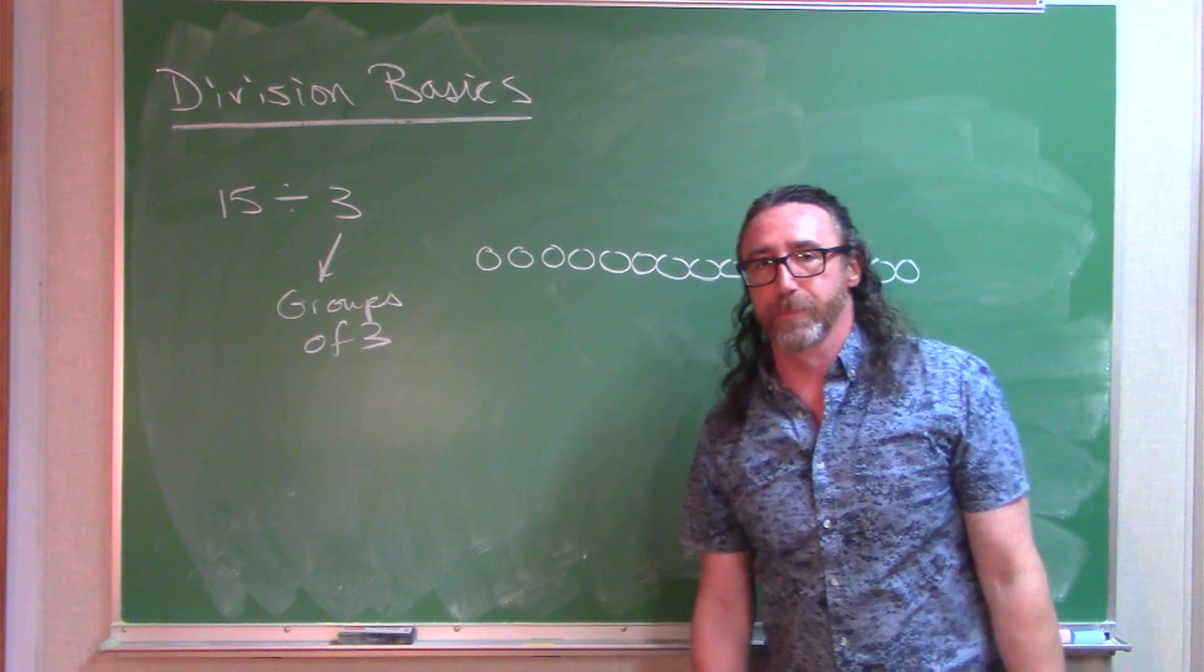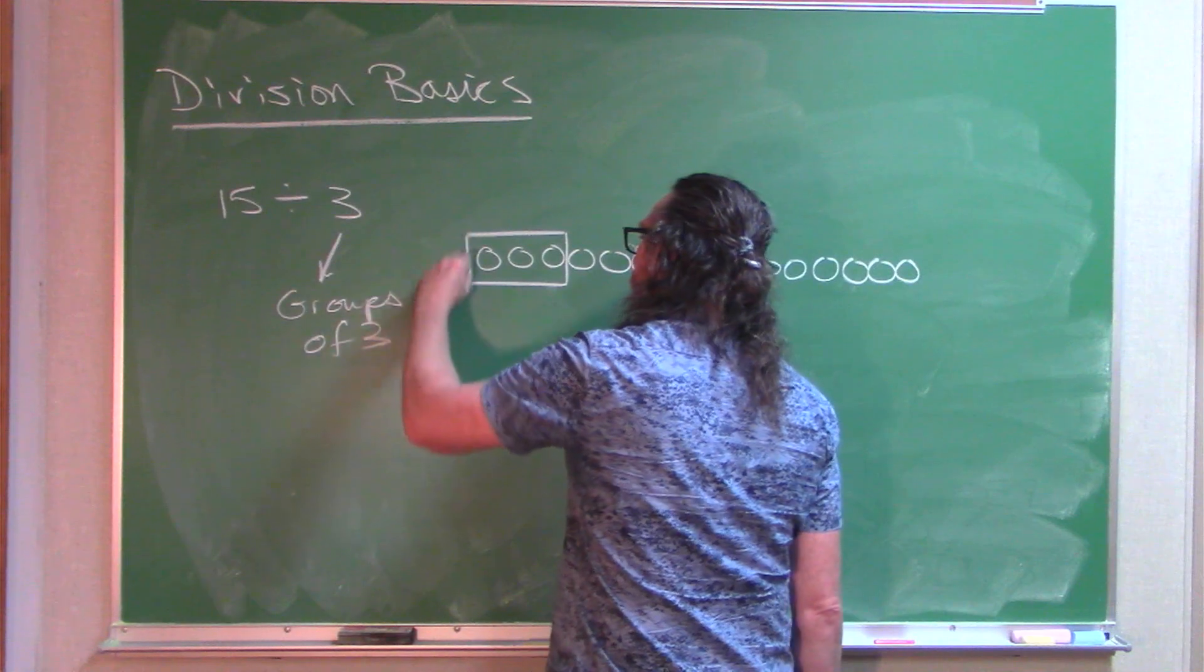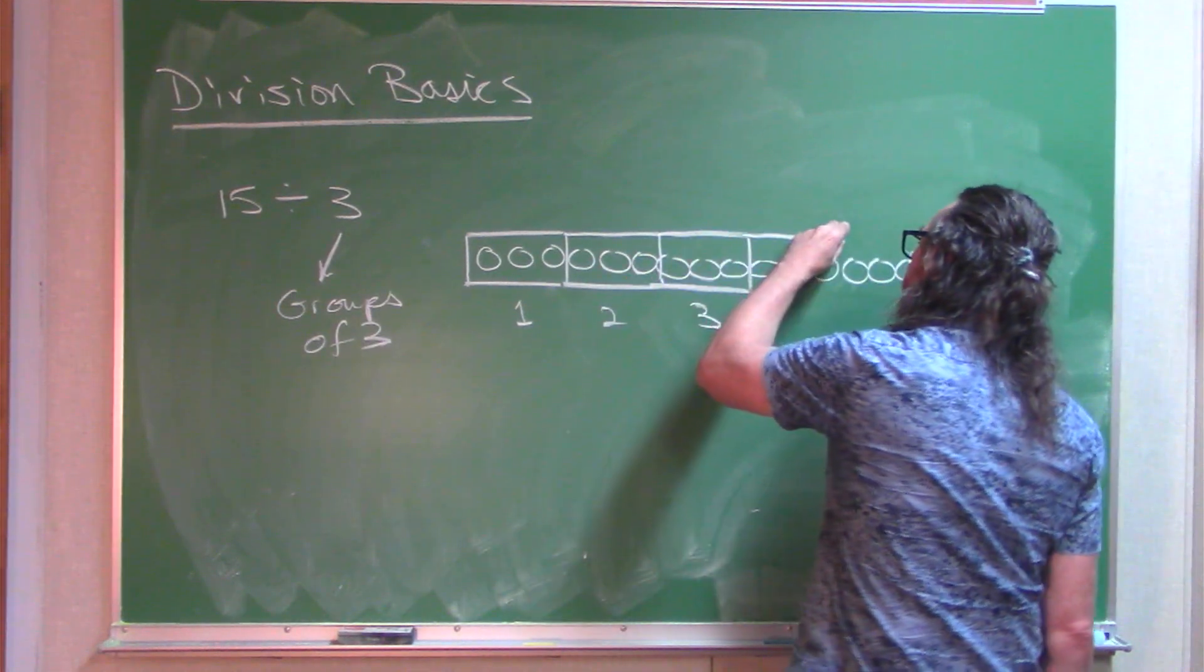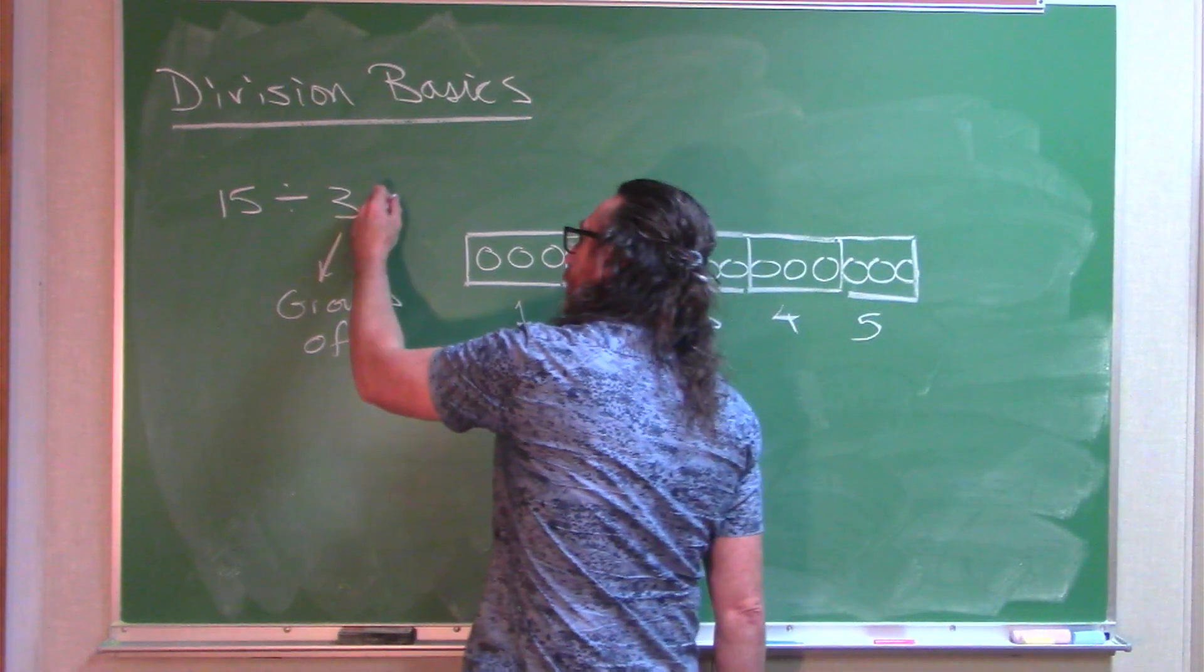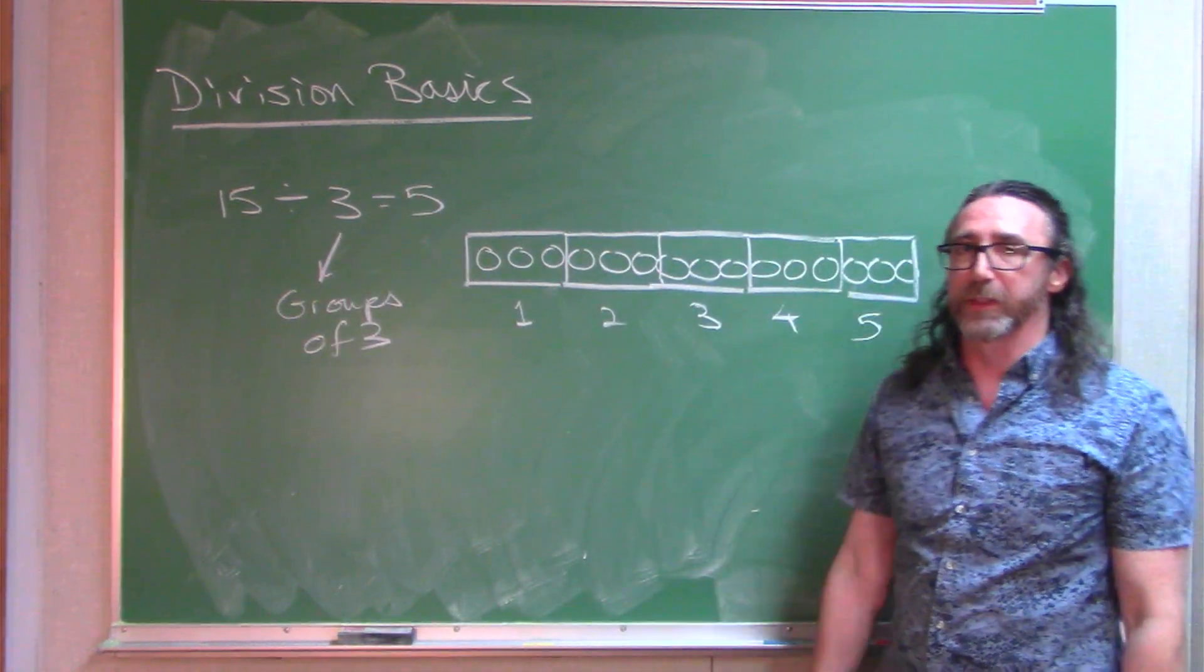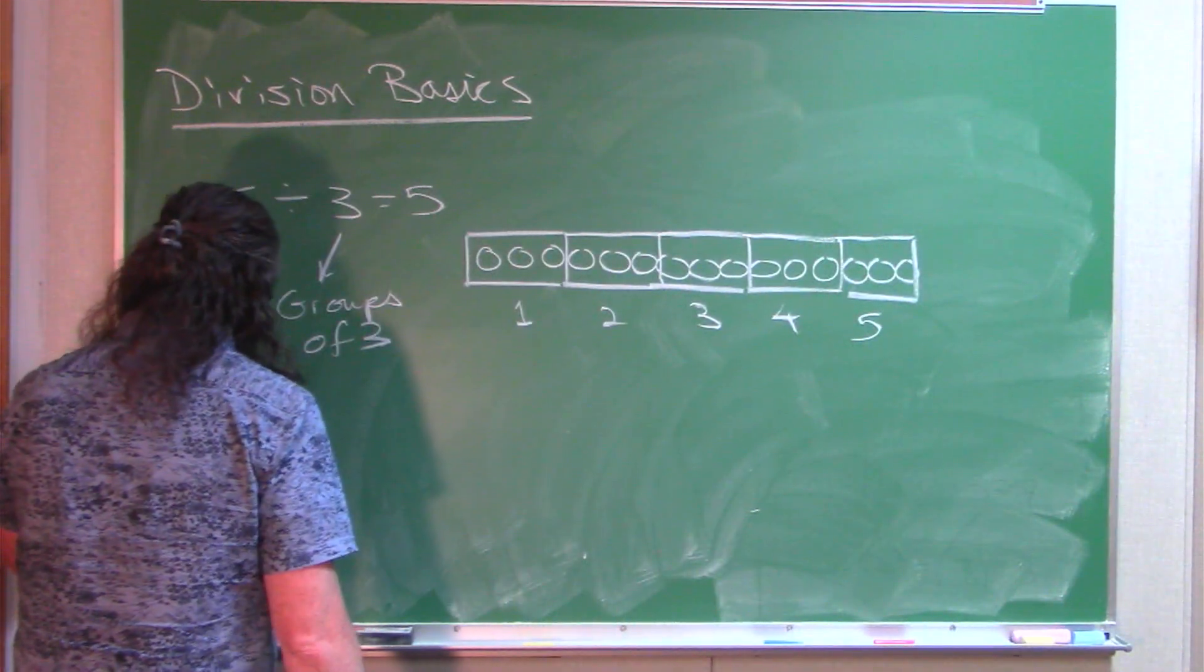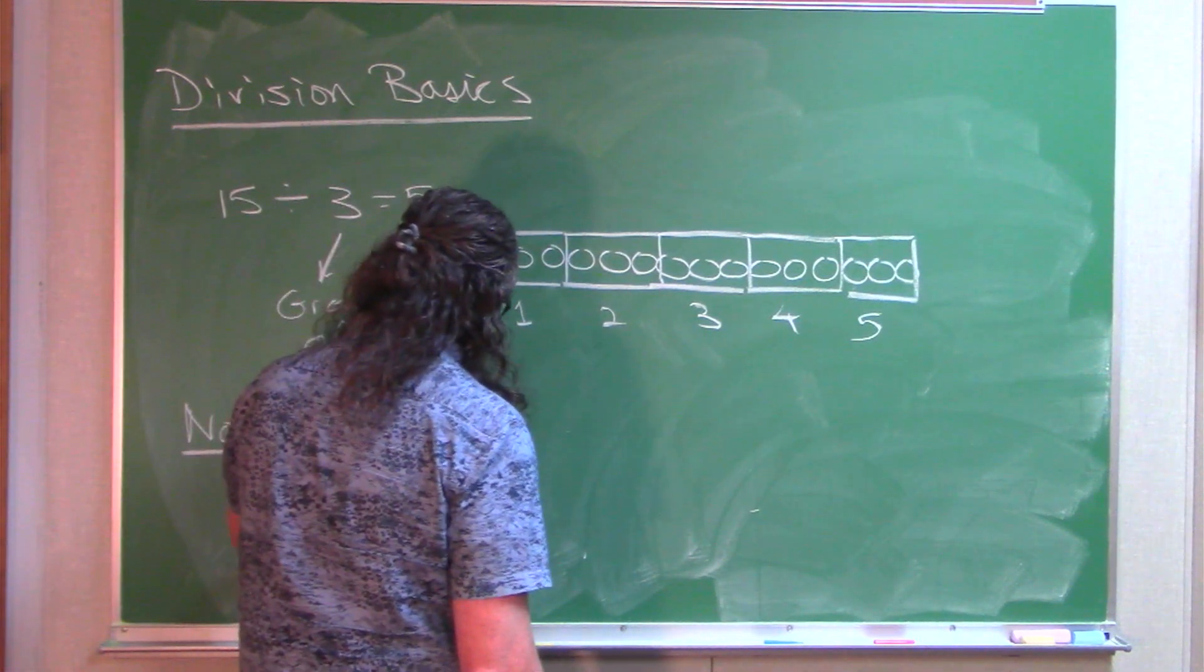If I have 15 counters, I am breaking them up into groups of 3 until I'm all done. So I have 1 group of 3, 2nd group of 3, 3rd group of 3, 4th group of 3, and a 5th group of 3. So to say 15 divided by 3 equals 5 means I can take a set of 15 things and break them up into 5 equal groups each of size 3.